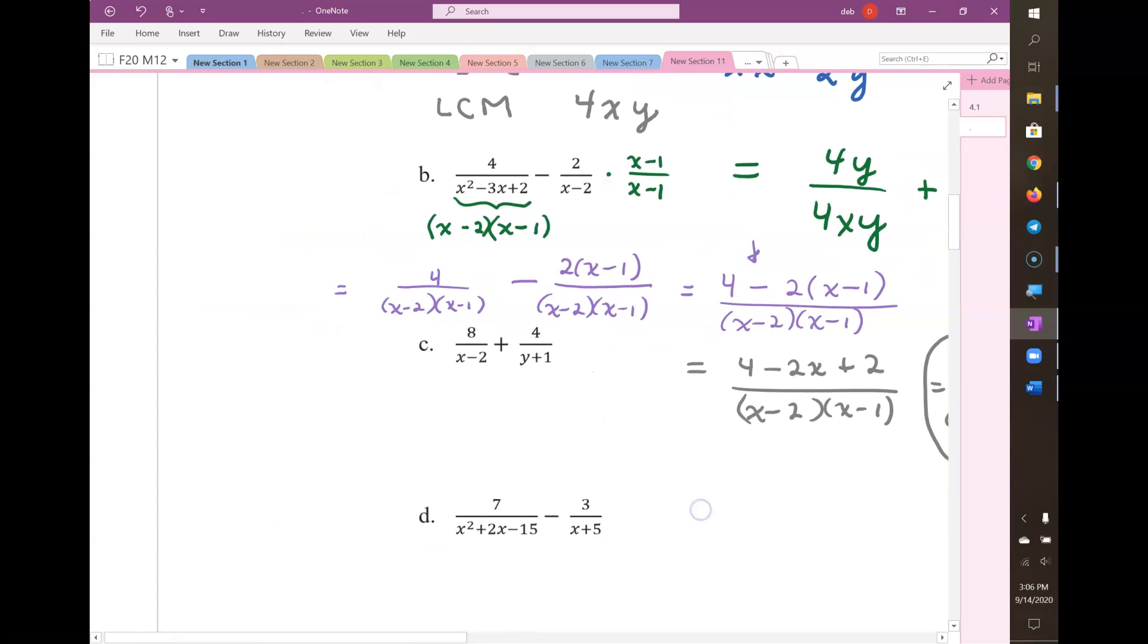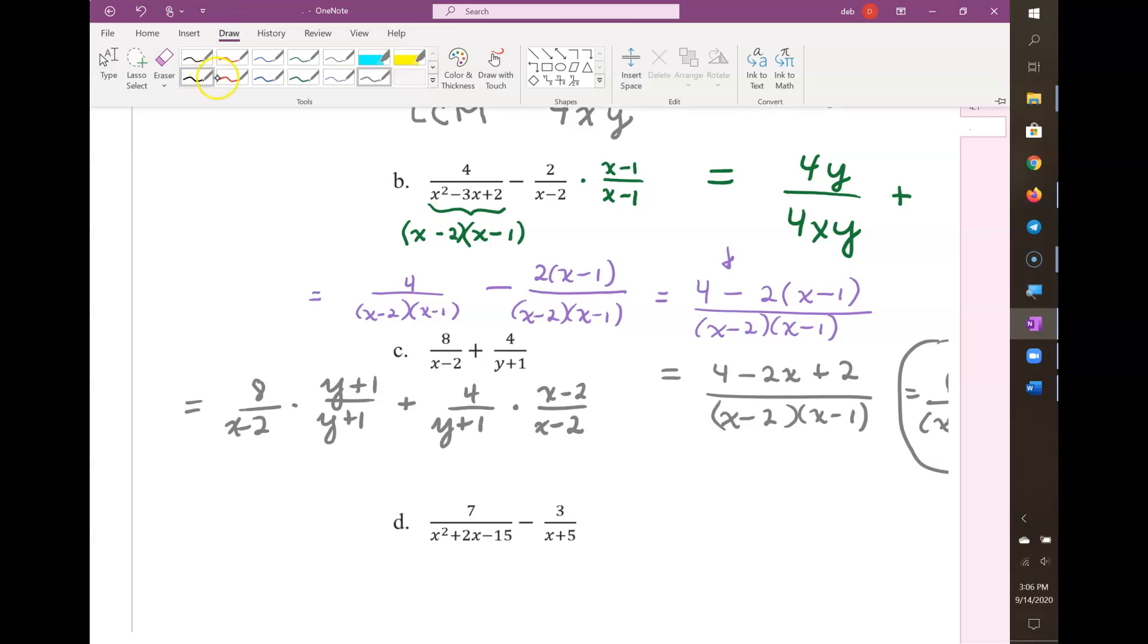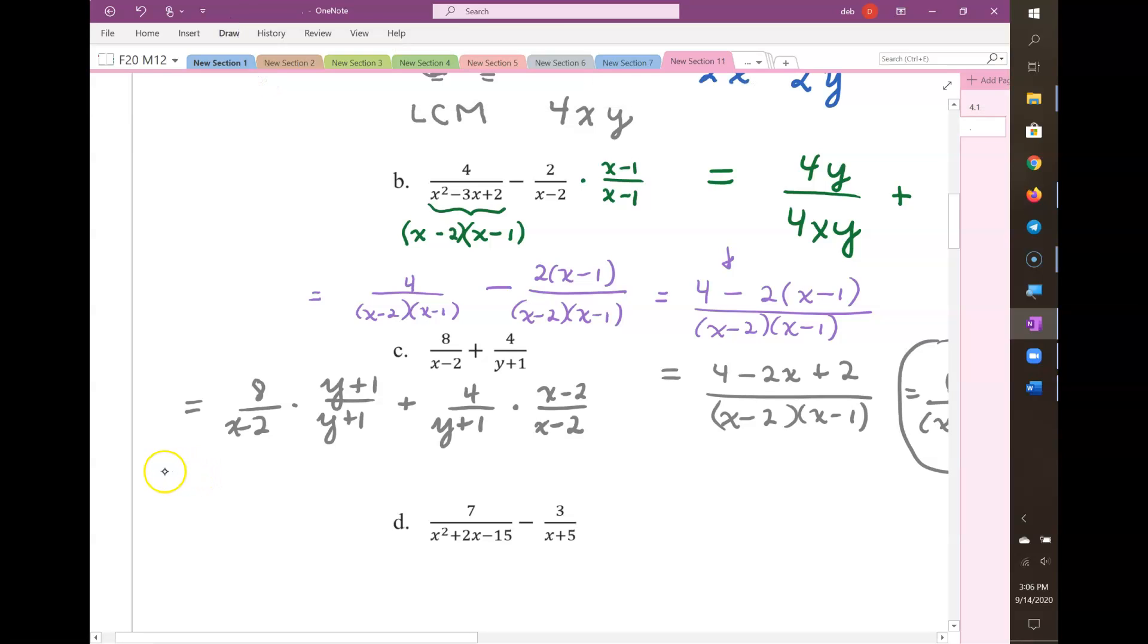The denominators have nothing in common. So the first fraction needs to be multiplied by (y plus 1) over (y plus 1), and the second fraction needs to be multiplied by (x minus 2) over (x minus 2). Then I'm going to have 8 times...